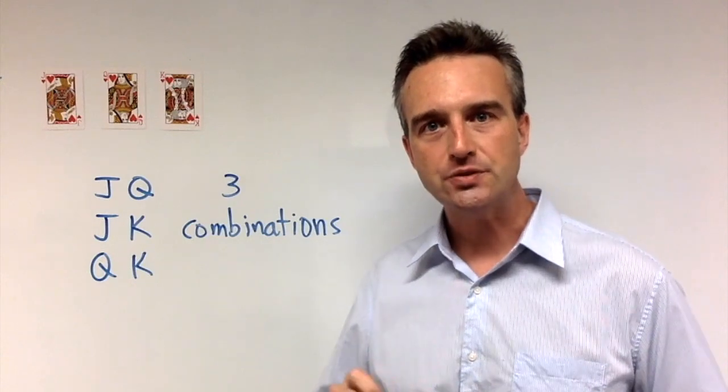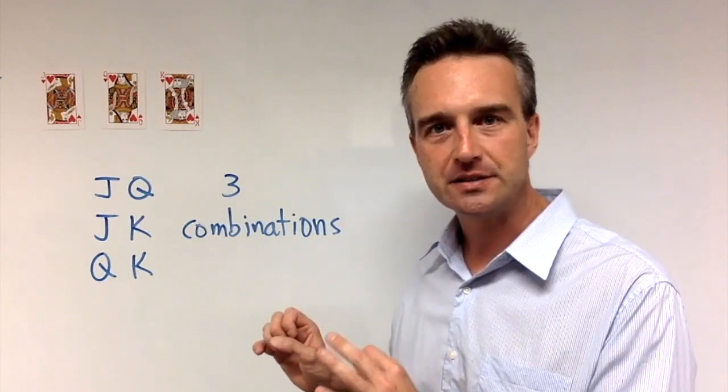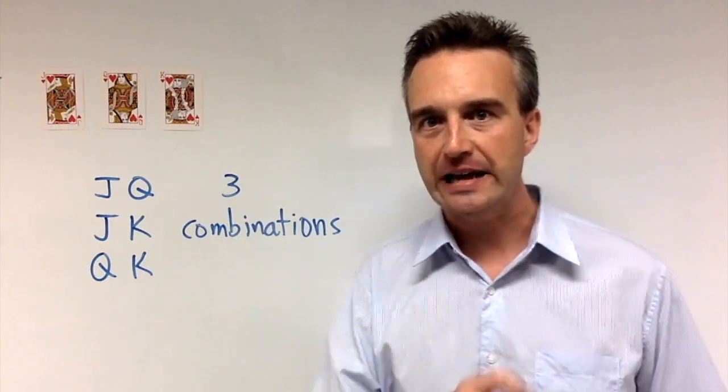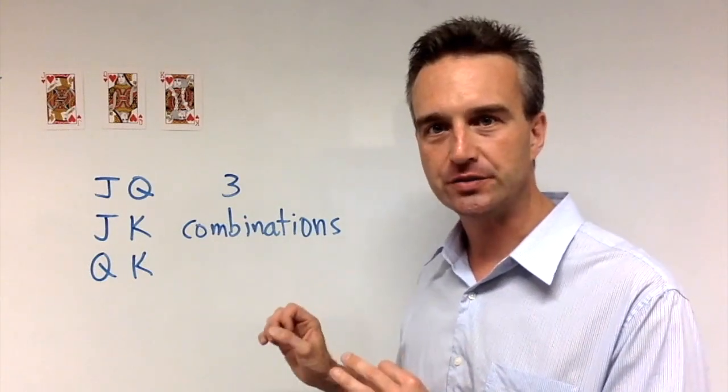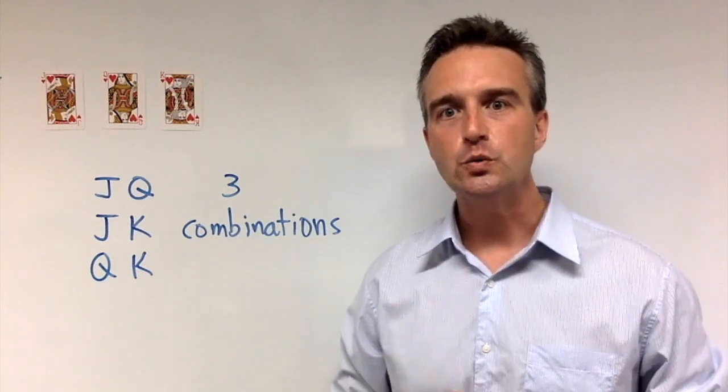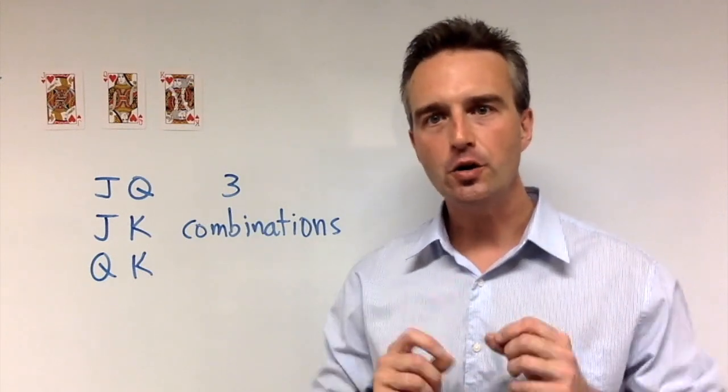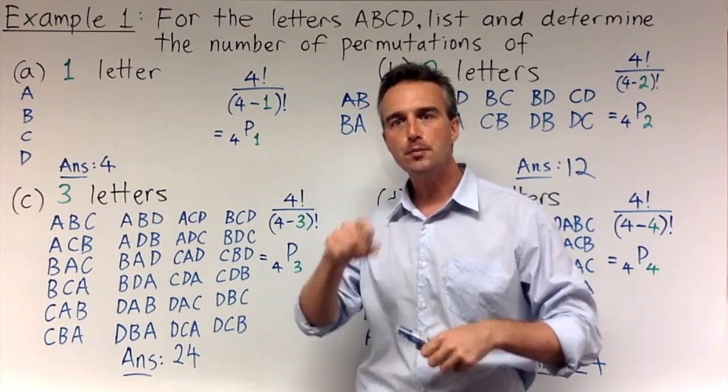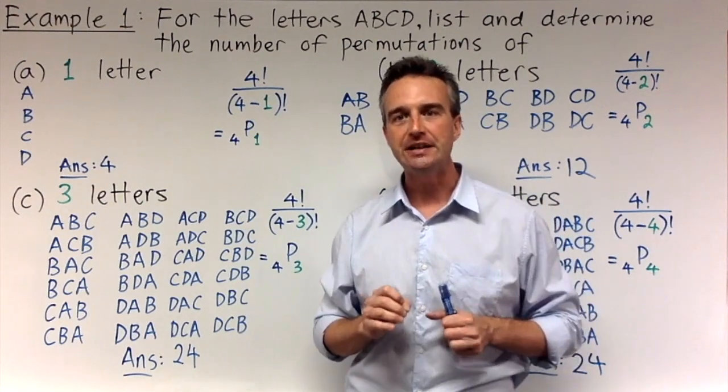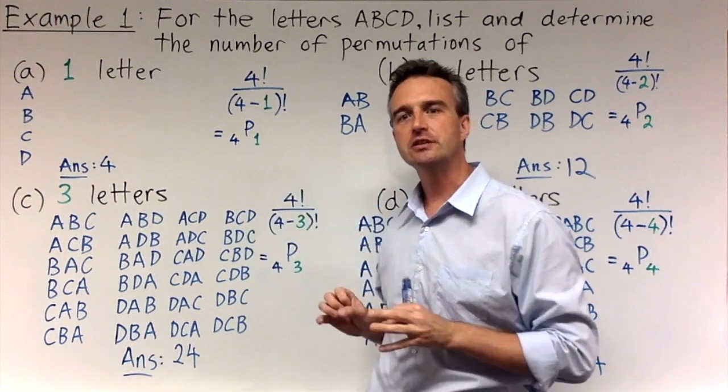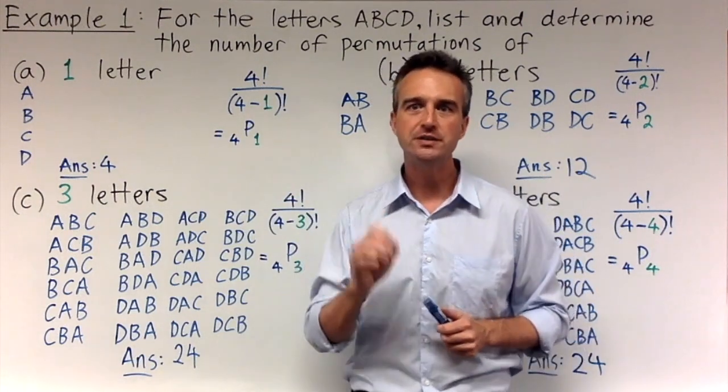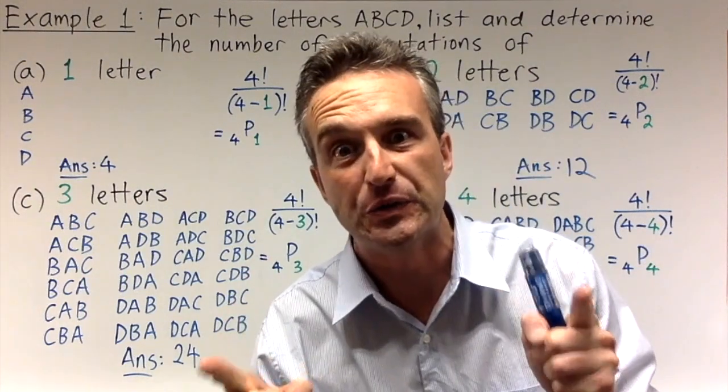Later on, when we get to example two, we're going to re-examine this little example here and show that our formula, which we're going to derive next, actually agrees with this result. So let's look now at example one, which is going to help us derive the combination formula. And I'm actually going to take example one from the previous video on permutations and change it a little bit to help me explain combinations. So if you haven't seen it, I really suggest you check that out first.